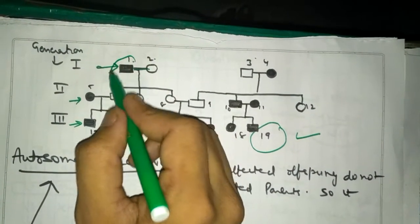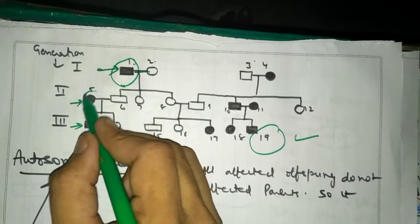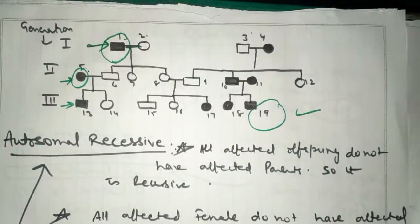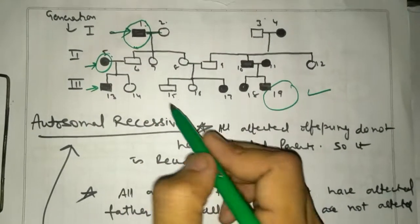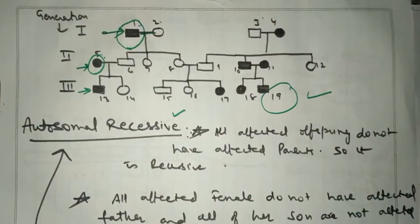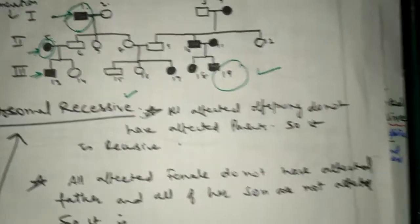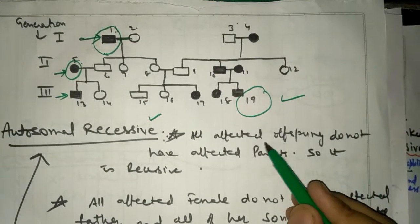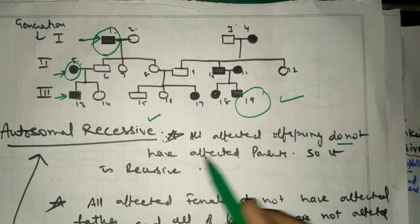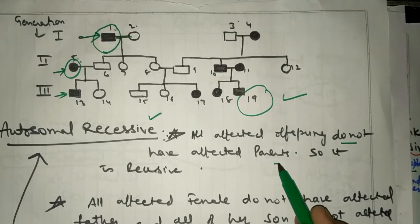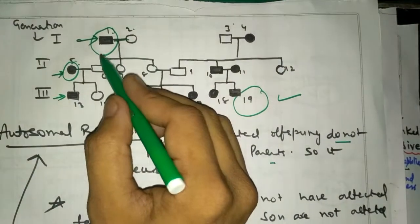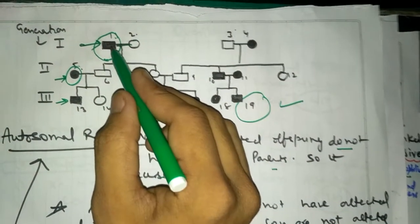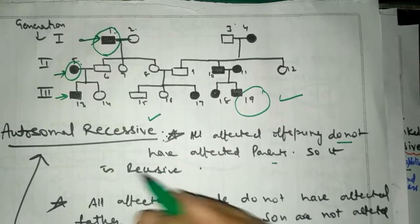Here is the affected male, this is affected female. The result is showing autosomal recessive inheritance. Why is it so? First of all, I have seen here all affected offspring do not have affected parents, so it is recessive. Also, it is skipping the generation, not appearing in all, so it is recessive and not occurring from parents to children regularly.